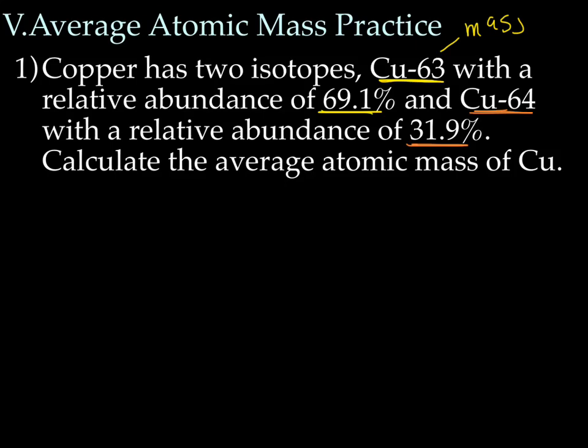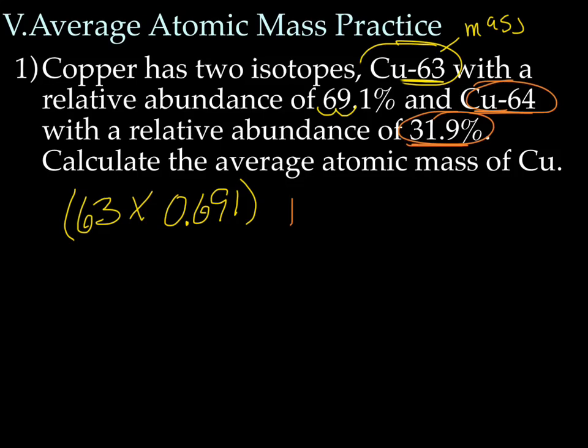So remember, we're now going to calculate the average atomic mass. So what we do is we multiply the mass times the relative abundance, and this mass times its relative abundance, and then add the two answers. So I'm going to take the mass of copper 63, which is 63, and I'm going to multiply that by 69.1% written as a decimal. And remember, when you have a percent and you want to write it as a decimal, you move the decimal back two places. So it's 63 times .691, and we're going to add to that the mass of copper 64 times its percent written as a decimal, which is .319.